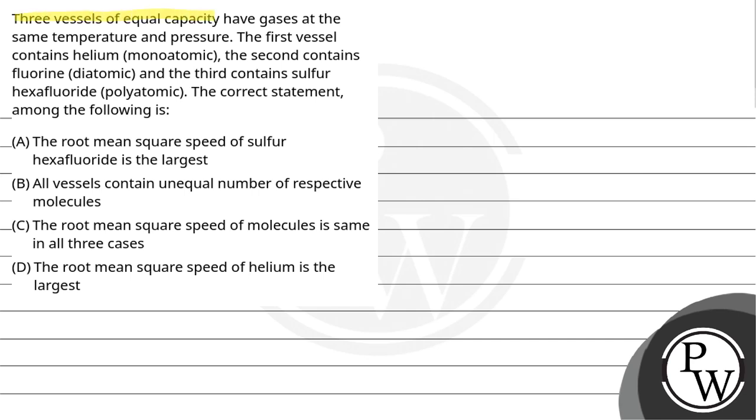Let's read the question. Three vessels of equal capacity have gases at the same temperature and pressure. The first vessel contains helium (monatomic), the second contains fluorine (diatomic), and the third contains sulfur hexafluoride (polyatomic). The correct statement among the following is: